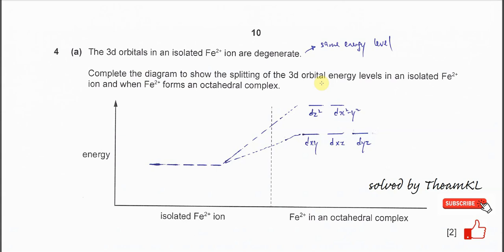Question 4a. The 3d orbitals in an isolated Fe²⁺ ion are degenerate. Degenerate means the d orbitals are at the same energy level. So the five 3d orbitals, these five orbitals, are at the same energy level before the complex ions form.